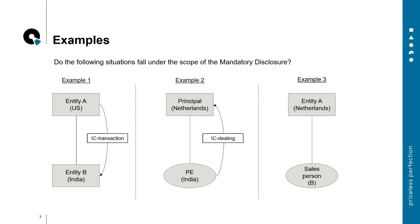Some brief examples of situations that could fall under the scope of the directive: The first example concerns an entity in the US and an entity in India — two non-EU countries — so those will not be reportable. The second situation concerns a Dutch entity that has a permanent establishment in India, with an intercompany dealing between the Netherlands and its permanent establishment — that could be reportable, provided it also meets the conditions of one of the hallmarks. The same could be true for an entity that has a salesperson in Belgium who qualifies as a permanent representative — if a reportable arrangement takes place, that would qualify as well.